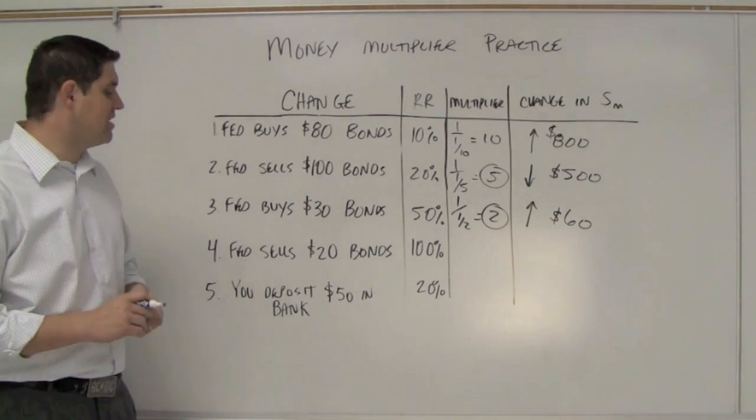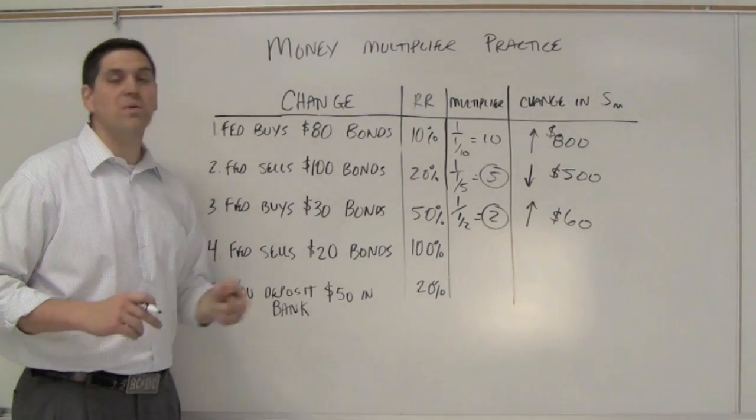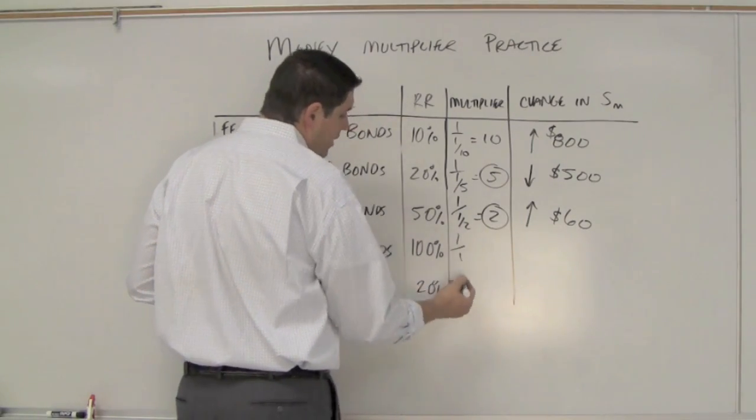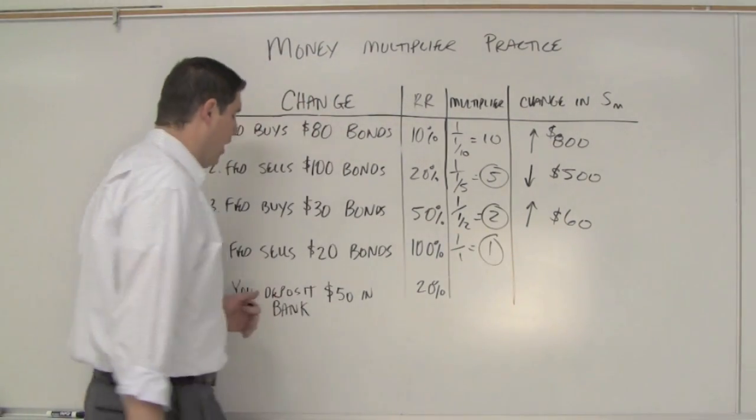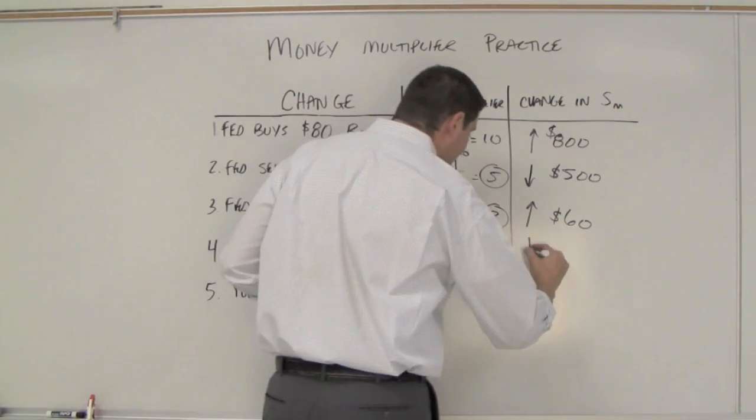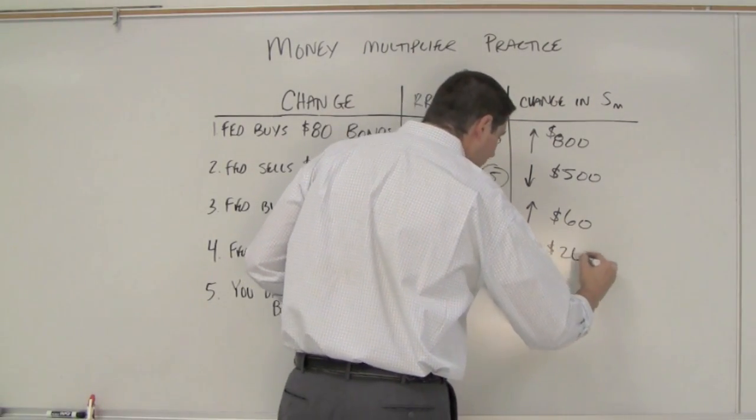Next one: the Fed sells $20 worth of bonds with a 100% reserve requirement. So it's 1 over 1, the multiplier is 1. If the Fed sells $20 worth of bonds, that's going to decrease the money supply, but only by $20.